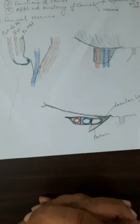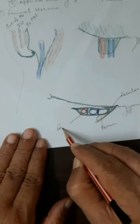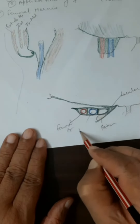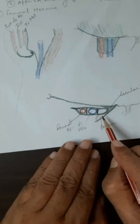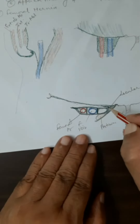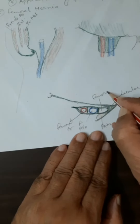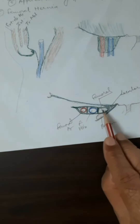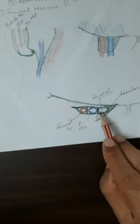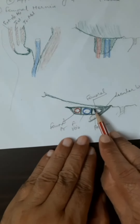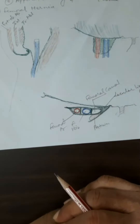So the femoral sheath is divided into three compartments: the lateral compartment contains the femoral artery, the middle compartment contains the femoral vein, and the medial compartment is an empty canal called the femoral canal. This medial-most compartment is occupied only by fibro-fatty tissue and one or two small lymph nodes, with nothing else passing through it except a few lymphatics.